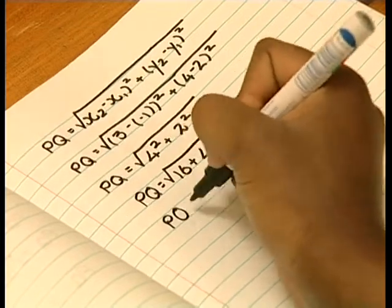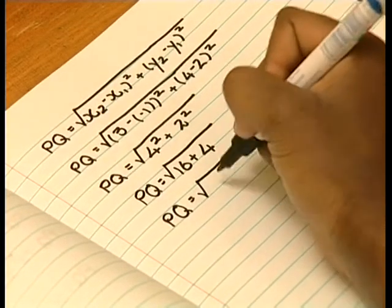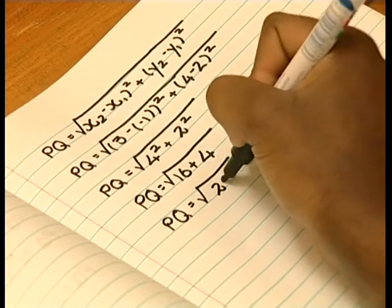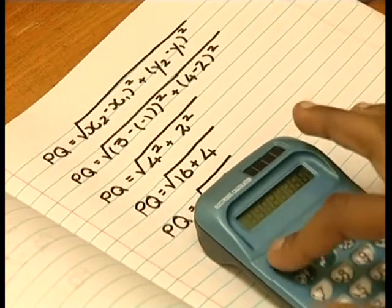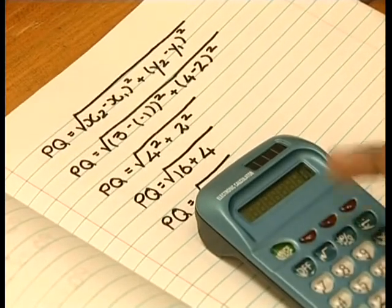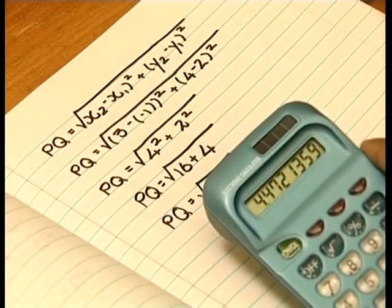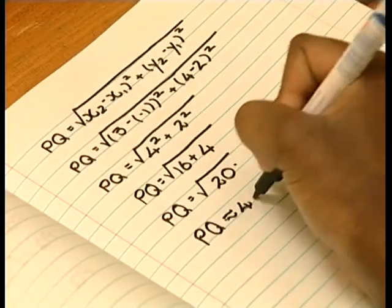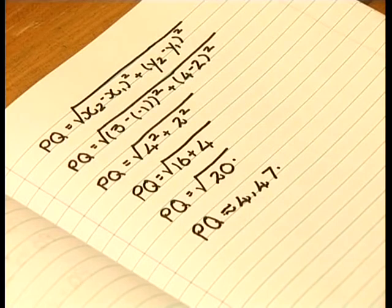So PQ equals the square root of 4 squared plus 2 squared, which is the square root of 16 plus 4, which is the square root of 20. My calculator tells me the answer is approximately 4.47, rounded off to two decimal places. Do you think that answer is reasonable, Rufilwe? Well, the square root of 25 is 5, so the square root of 20 must be a bit less than that. It seems that the formula really does work.